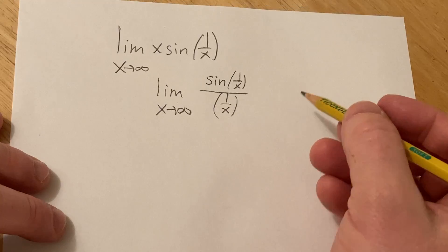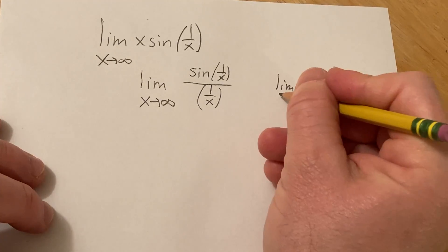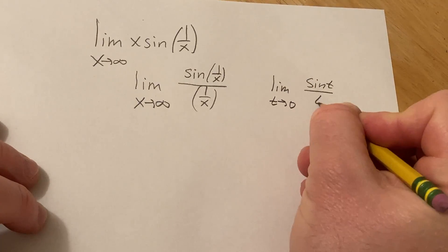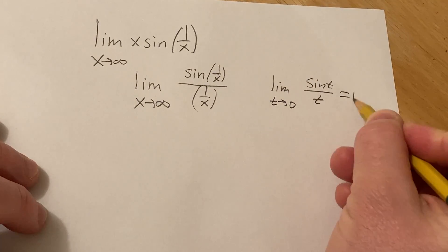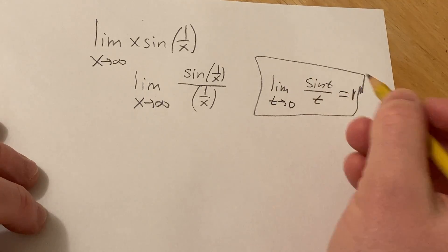And this reminds me of a very familiar limit. It reminds me of this limit here if you have the limit as t approaches 0 of sine t over t. This is equal to 1. This is one of those really important limits that you typically learn in a calculus 1 course.